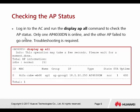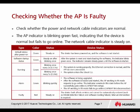Log in to the AC and run the 'display AP all' command to check the AP status. Right now they only detect one AP going online and the other APs fail to go online, so troubleshooting is required. Check whether the power and network cable indicators are normal. When the AP indicator is not blinking or lit up, that means it's a power failure. When the indicator is blinking very fast, the device is normal but failing to go online.